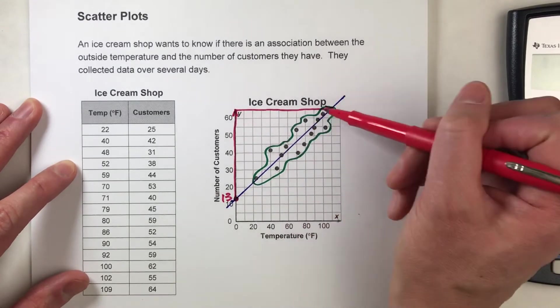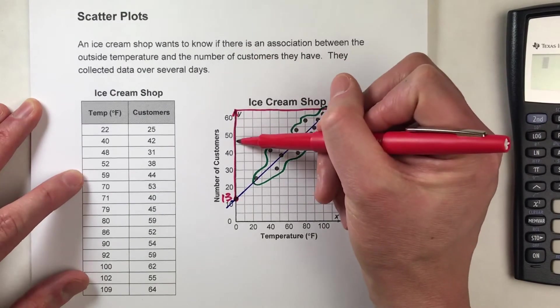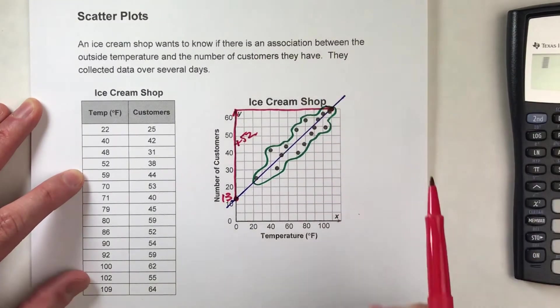it's going from 13 to 65. So that means it went up 52. So there's my rise, 52.